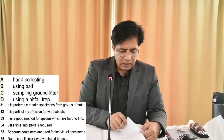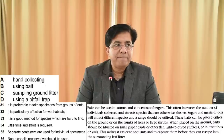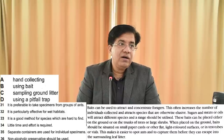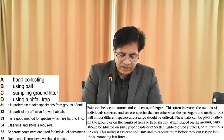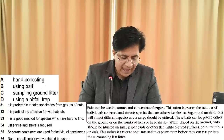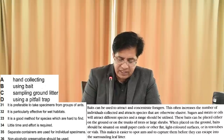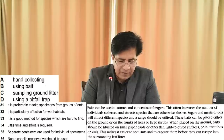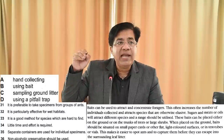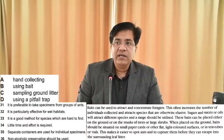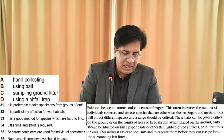Option B is bait. Question 33 says 'it is a good method for species which are hard to find.' In paragraph B it reads: 'bait can be used to attract and concentrate foragers, often increasing the number of individuals collected and attracting species that are otherwise elusive.' Underline 'elusive' — it means hard to find. So for question 33, B is the correct answer.